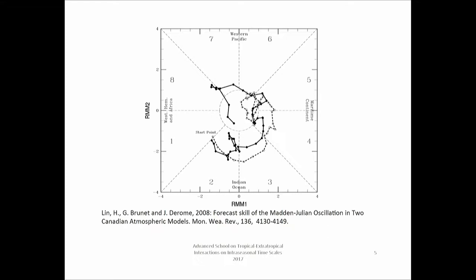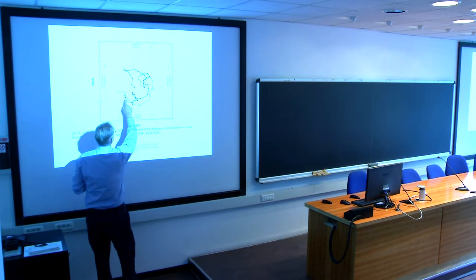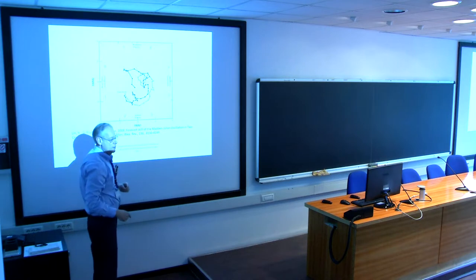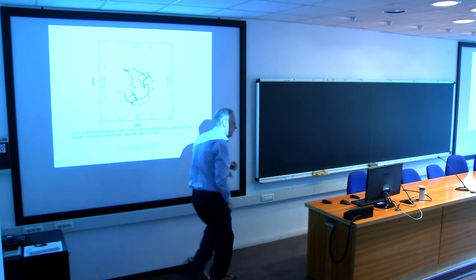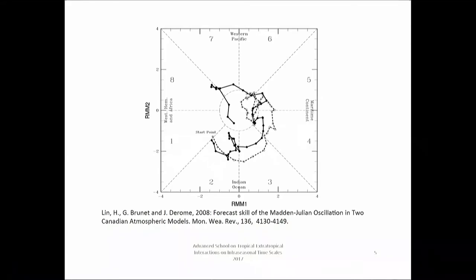One of these is the forecast and one is the actual observations in this paper, but for our purposes it doesn't matter. In the standard two-dimensional representation, if it's in phase one the convection is somewhere in the western hemisphere or Africa, and as it moves through phase three the convection is in the Indian Ocean. But in forecasts or observations you can get periods where this model of the MJO is clearly off, because the amplitude decreases and starts propagating the other way — a result of reducing the data to this simple two-dimensional form.